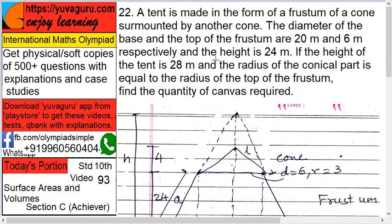3.14 × 3 × 5 = 47.1 m². Quantity of canvas equals surface area of frustum plus surface area of cone: 1020.5 + 47.1 = 1067.6 m². This much canvas will be required.